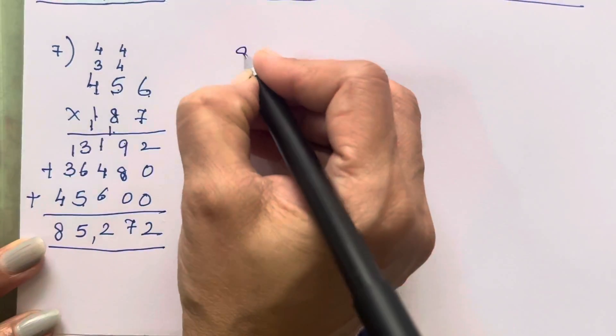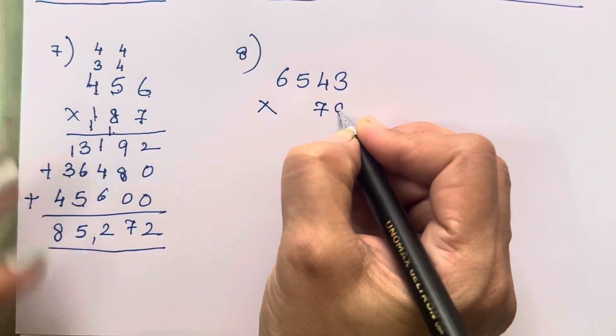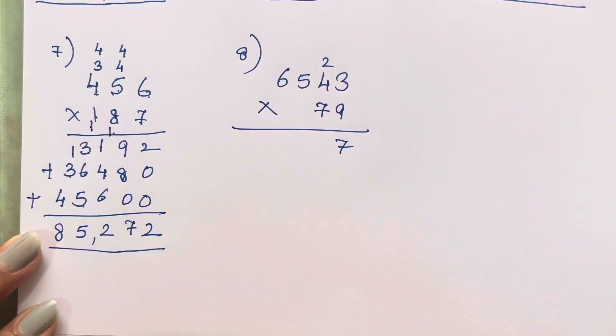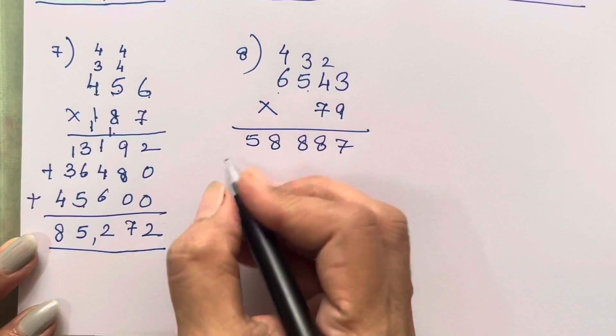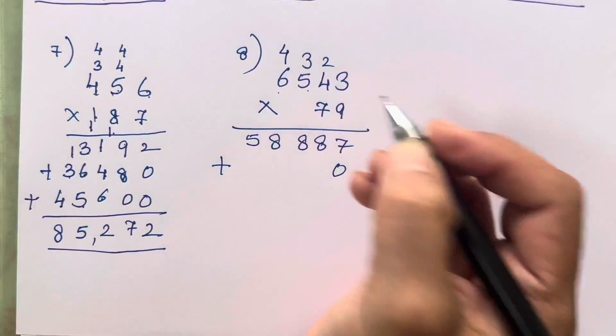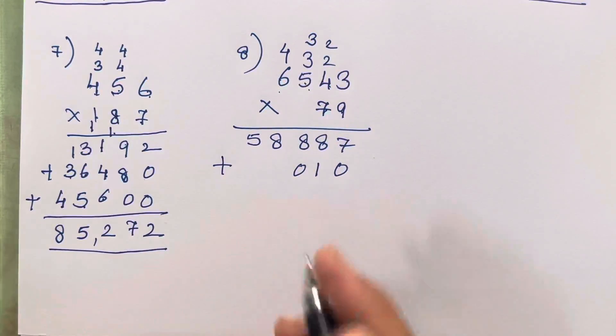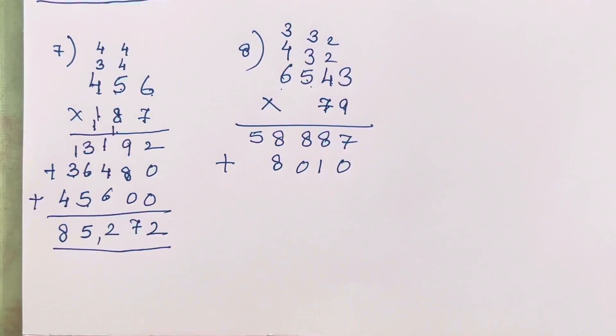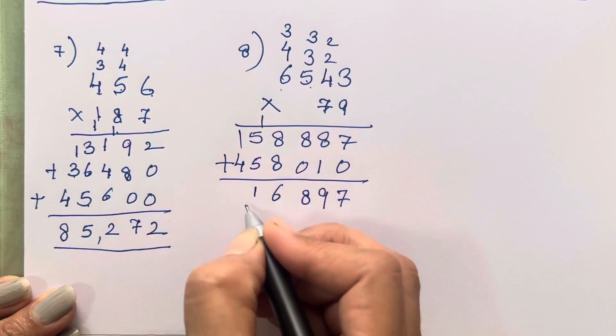Let's move on to the 8th sum. That is 6543 multiplied with 79. So 3 nines are 27, 4 nines are 36, 37, 38. 5 nines are 45, 46, 47, 48. 6 nines are 54, 55, 56, 57, 58. By the time now you have understood what is the method, same method we have to do, only you should be able to learn your tables by heart. Then only it will be very easy for you all to solve. So 3 sevens are 21, 7 fours are 28, 29, 30. 5 sevens are 35, 36, 37, 38. 6 sevens are 42, 43, 44, 45. So 7, 9, 8, 16, 11 and 5.